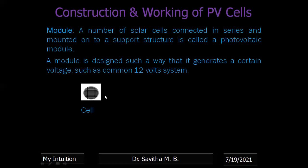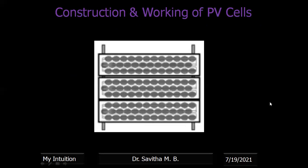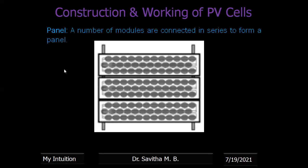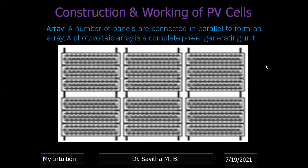A single unit is a cell. A module is designed to generate a certain voltage — a common module generates 12 volts, and has 36 such cells connected in series. A number of modules connected in series form a panel. A number of panels — say six — connected in parallel form an array. A photovoltaic array is a complete power generation system.